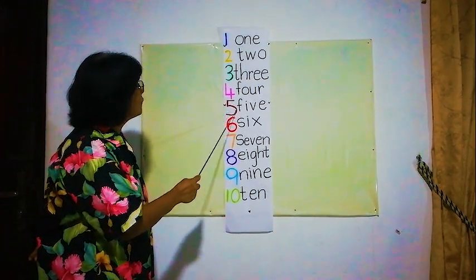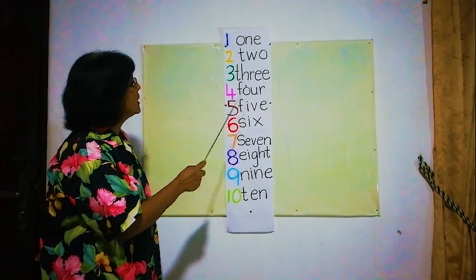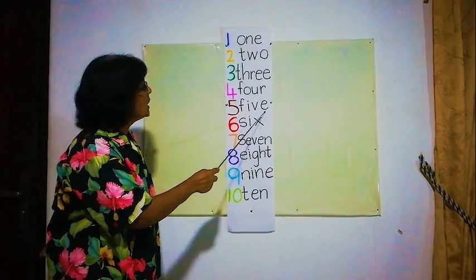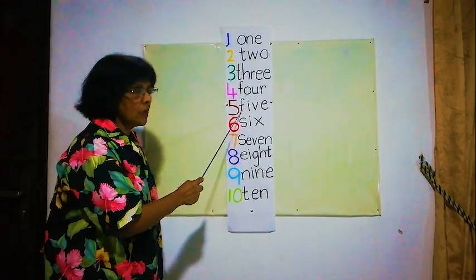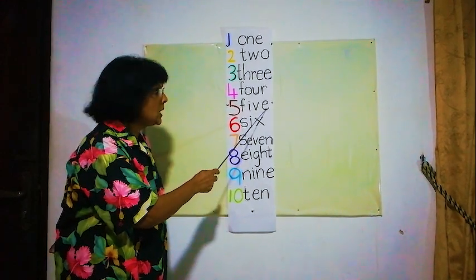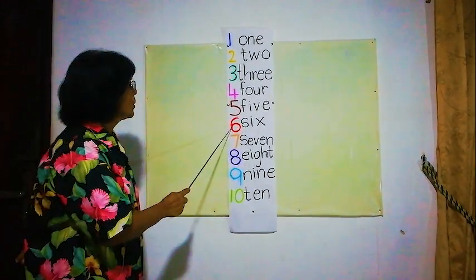Now here number 5. How do you spell 5? F, I, V, E, 5. F, I, V, E, 5.